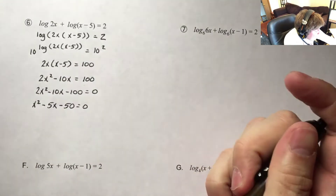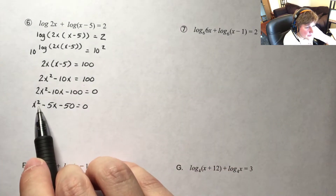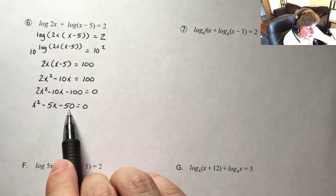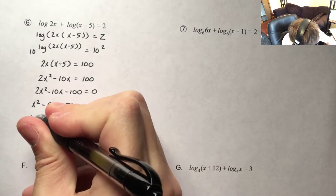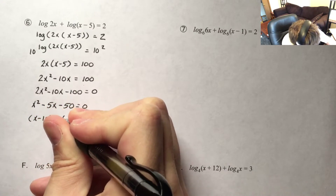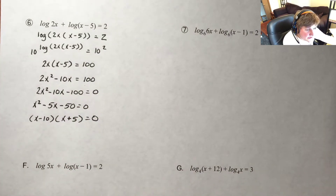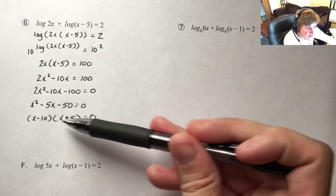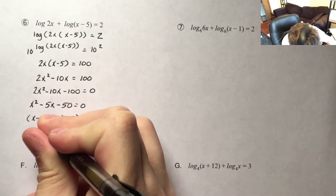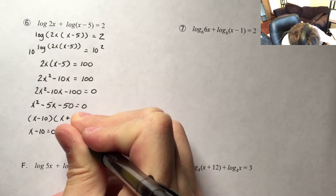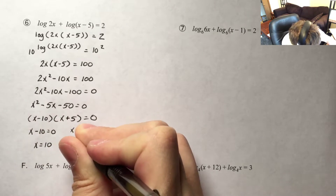Now I have a trinomial with an a value of 1. You can use that pink cheat sheet if you feel like you need it to factor. An a value of 1 with 3 terms tells me I'm multiplying to negative 50 and adding to negative 5, which gives me negative 10 and positive 5. The zero product property tells me that x minus 10 equals 0 or x plus 5 equals 0, so x is 10 and x is negative 5.